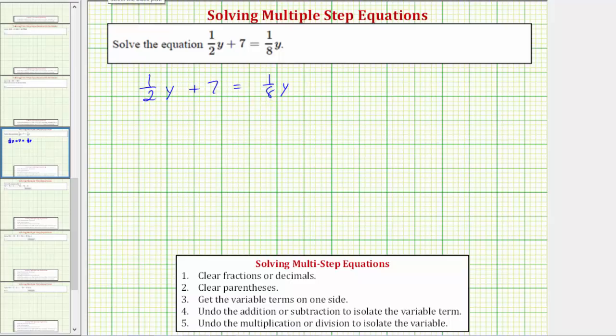Therefore, to clear the fractions, we will multiply both sides of the equation by 8. Again, we could multiply by any common denominator, but if we multiply by the least common denominator, there will be less simplifying later.